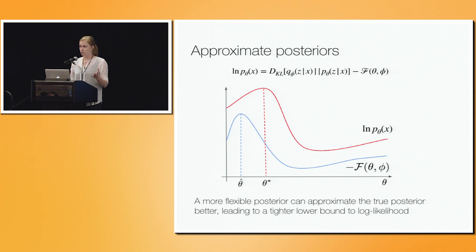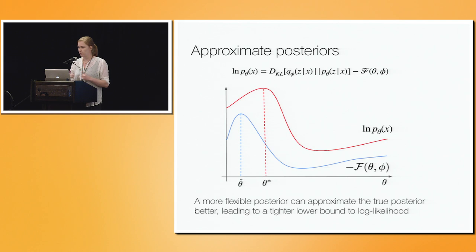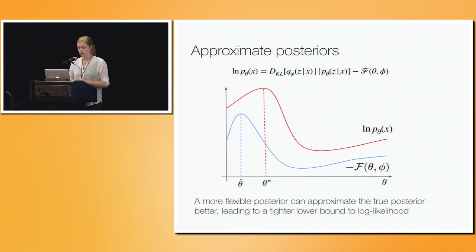We're optimizing an evidence lower bound with respect to the marginal log likelihood, but because it's just a lower bound, the two curves don't necessarily share the same local maximum. So we'd want to reduce this gap, and one way to do that is by making sure our approximate posterior can approximate the true posterior as well as possible. That requires a very flexible family of distributions for Q — more flexible than the standard diagonal covariance Gaussian.